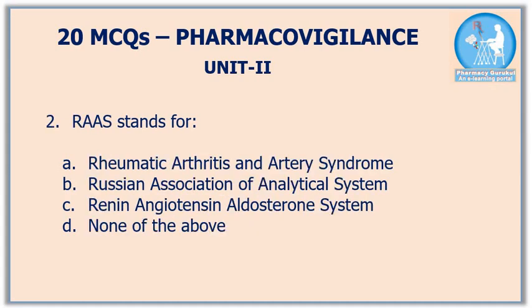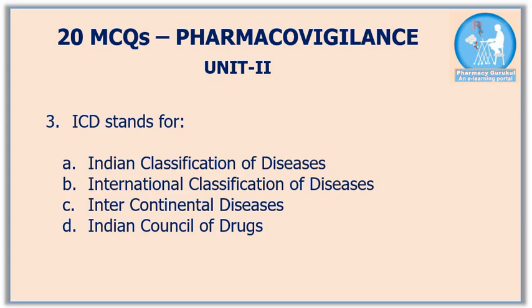Second question: RAAS stands for — the correct answer is option C, renin angiotensin aldosterone system. It is a hormone system within our body and is essential to regulate blood pressure and fluid balance. Third question: ICD stands for — the correct answer is option B, international classification of diseases.